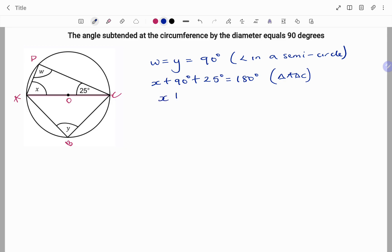Using the balance method, I have x equals 180 degrees minus 115. Therefore, the value of x equals 65 degrees. Thanks for watching!